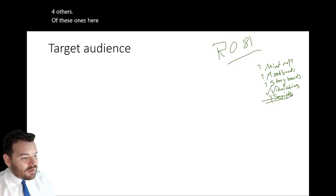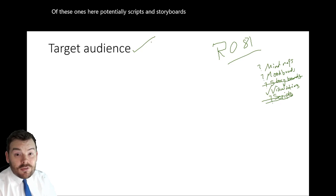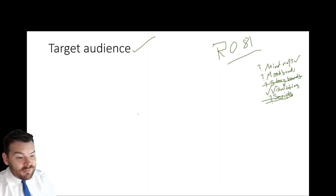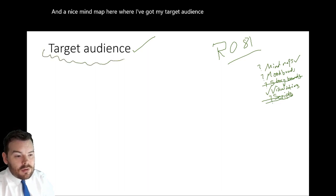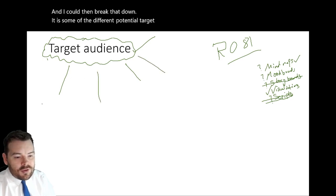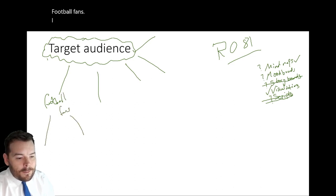Of those five tools, scripts and storyboards aren't really going to help me right now with this target audience task — it doesn't make much sense and would be a poor use of them, though you're welcome to do so. A mind map, however, feels like it would work well for me — a nice mind map with my target audience all listed up. I could then break that down into different potential target audiences, such as football fans — and this might be broken down even further, perhaps into fans of the men's game and fans of the women's game.